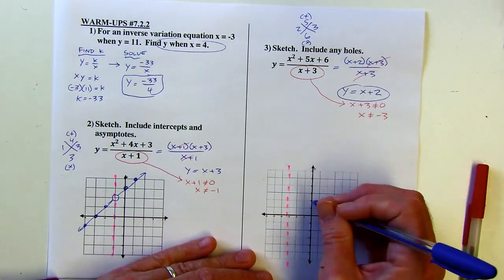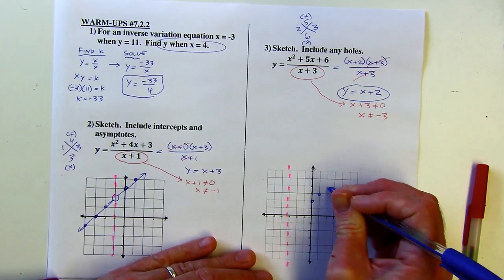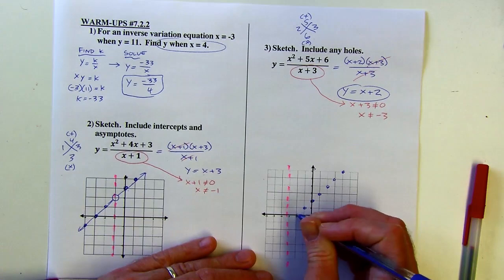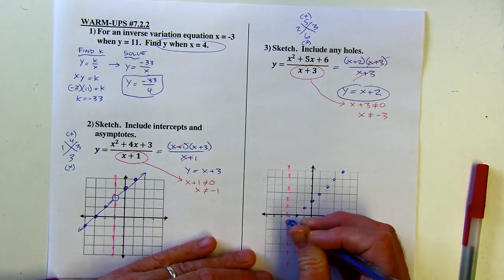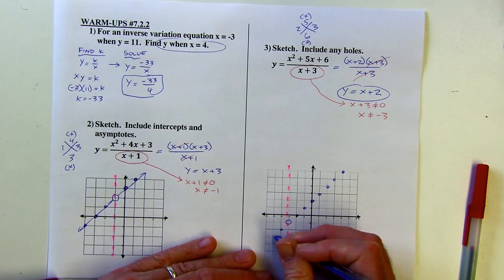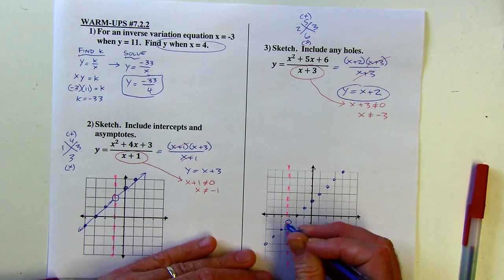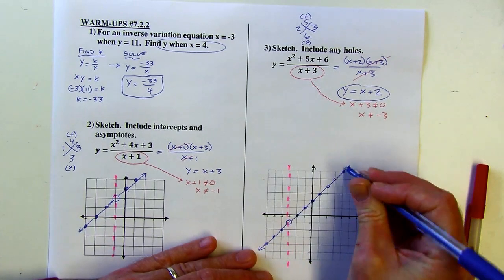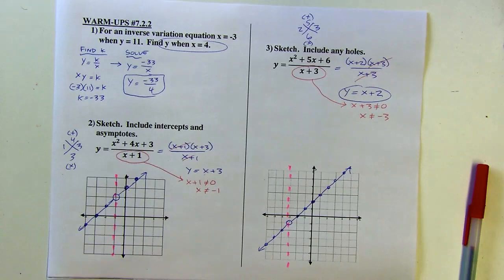And then I'll just graph this line and put a gap when I get to the pink line there. Okay. So y intercept of 2, slope of 1, up 1 to the right one, up 1 to the right one. Okay. And I'll go down 1 to the left one, down 1 to the left one until I get there to my gap. And I'll continue that on the other side. So anything on this line except where x equals negative 3 will work.